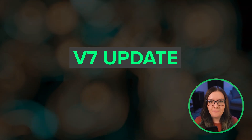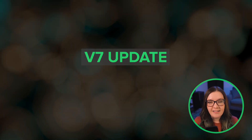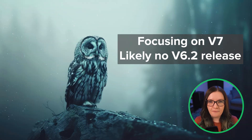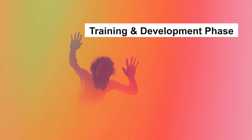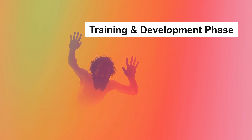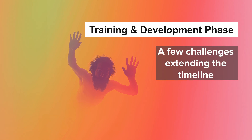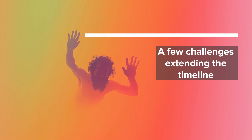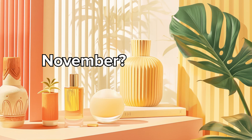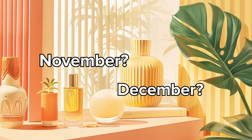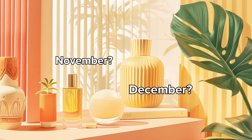Looking ahead, let's talk about V7. The team has decided to prioritize V7 development over a V6.2 release. V7 is in the development and training phase. They hit a few challenges and bugs and had to restart some of the training, which pushes back the release at least a couple of weeks. It should be out by the end of the year, likely in November or December, barring any further significant delays.